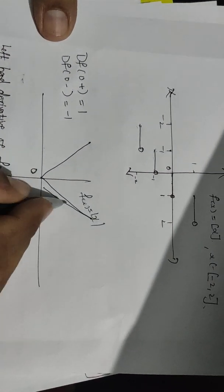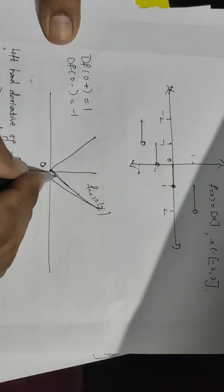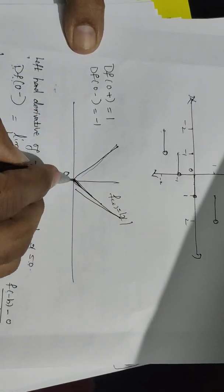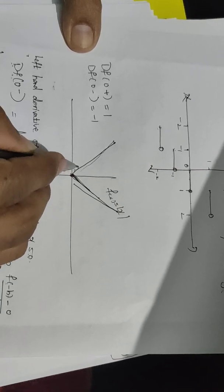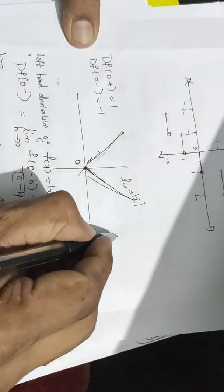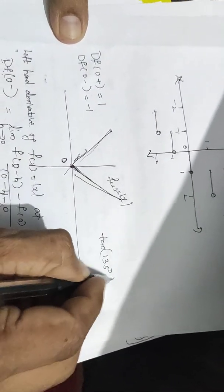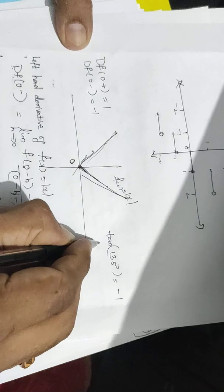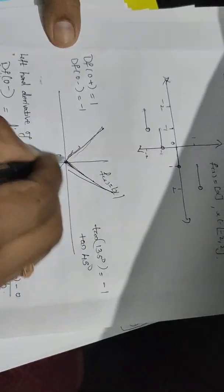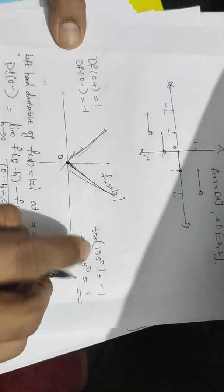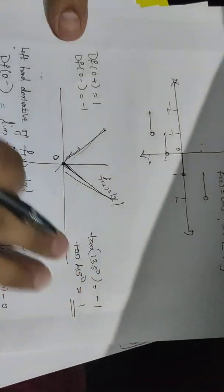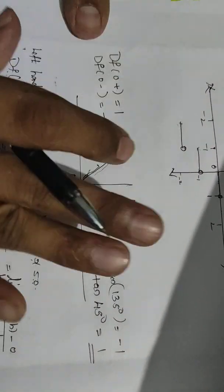Here at 45 degrees we have a positive tangent, and at 135 degrees we have a negative tangent. tan(45°) equals positive 1 and tan(135°) equals minus 1. So the right-hand derivative is 1 and the left-hand derivative is minus 1.